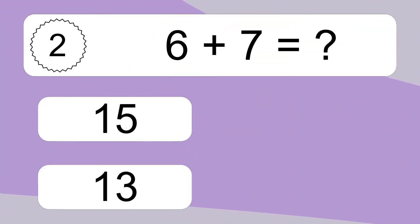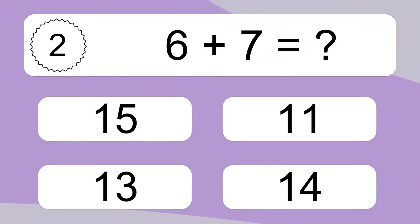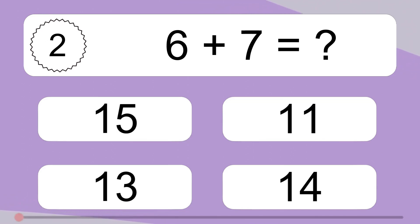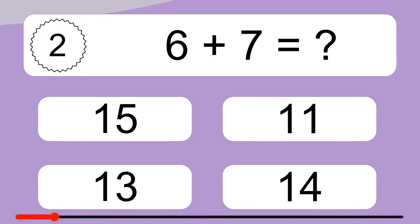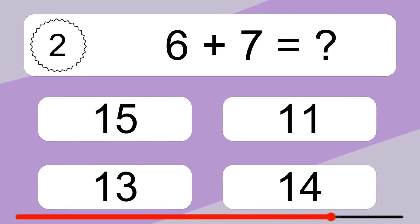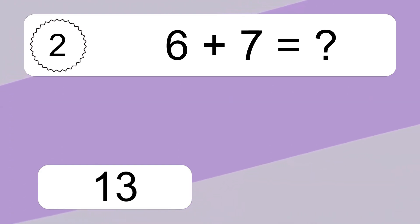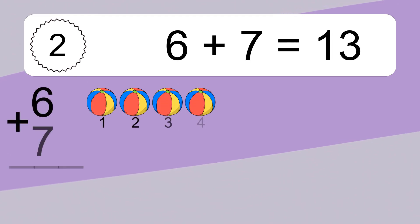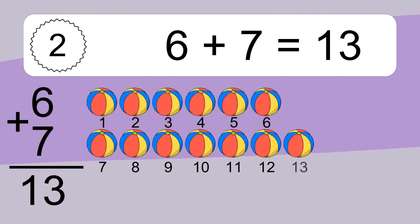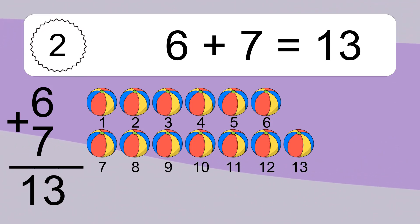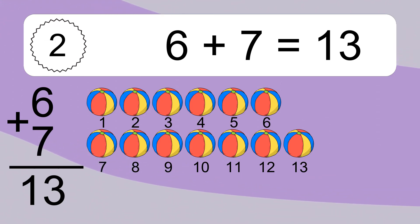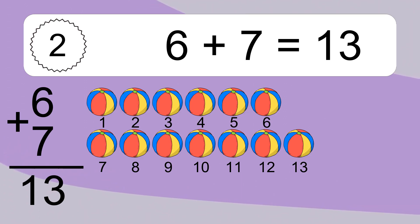6 plus 7 equals what? 6 plus 7 equals 13. Let's count it: 1, 2, 3, 4, 5, 6, 7, 8, 9, 10, 11, 12, 13.